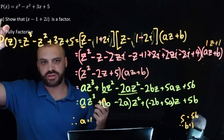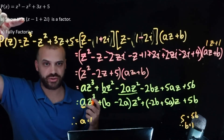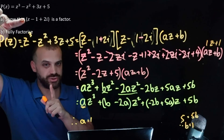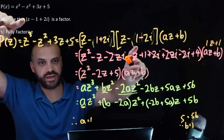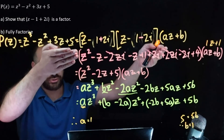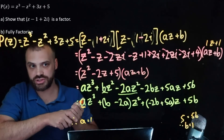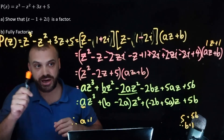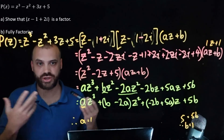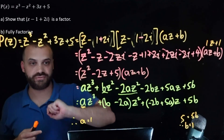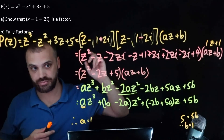We started with the question: fully factorize. We knew z minus 1 minus 2i was a factor, used the conjugate root theorem to find z minus 1 plus 2i was also a factor, and through expanding and equating coefficients we've found the last factor is z plus 1. Therefore P(z) fully factorized is z minus 1 minus 2i, times z minus 1 plus 2i, times z plus 1. That is our solution.